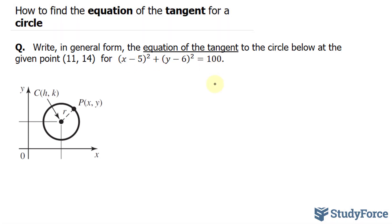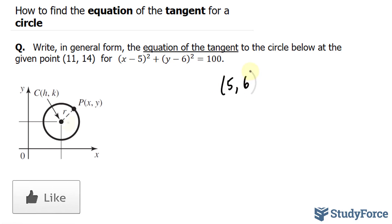The equation we have here is currently in standard form, and when a circle equation is in standard form, you can easily identify the coordinates for the center of that circle. For instance, we have negative 5 here and negative 6 here, which means our center for the circle is at positive 5 and positive 6.